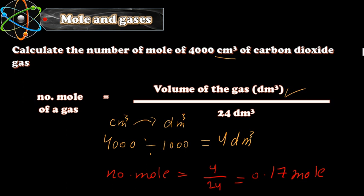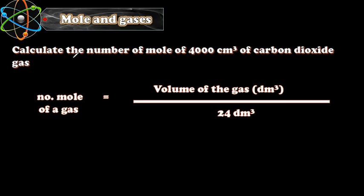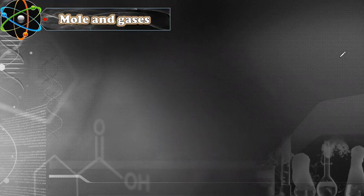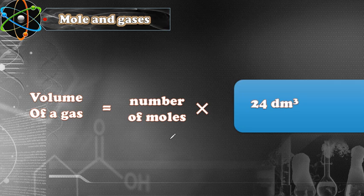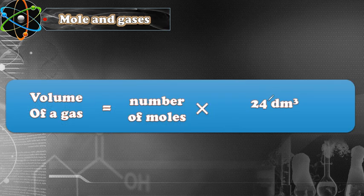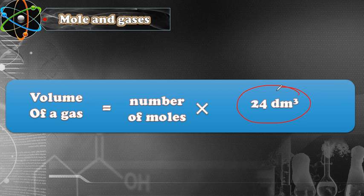Sometimes you are given the number of moles and they want you to find the volume instead. That is quite easy — it's the same idea. Volume of a gas equals number of moles times 24 dm³. We use this constant all the time for gases because one mole of any gas at room temperature and pressure occupies 24 dm³.